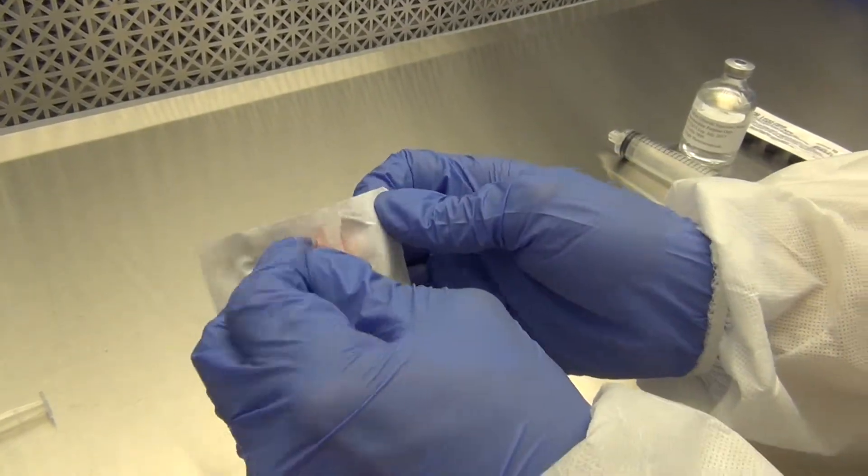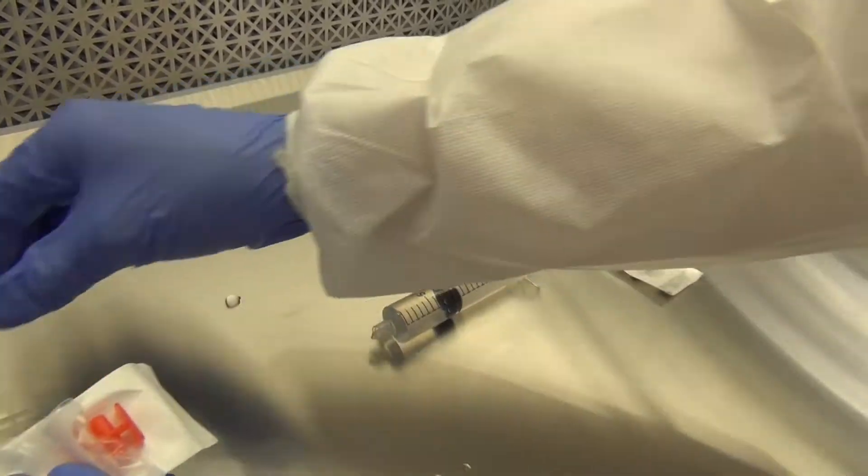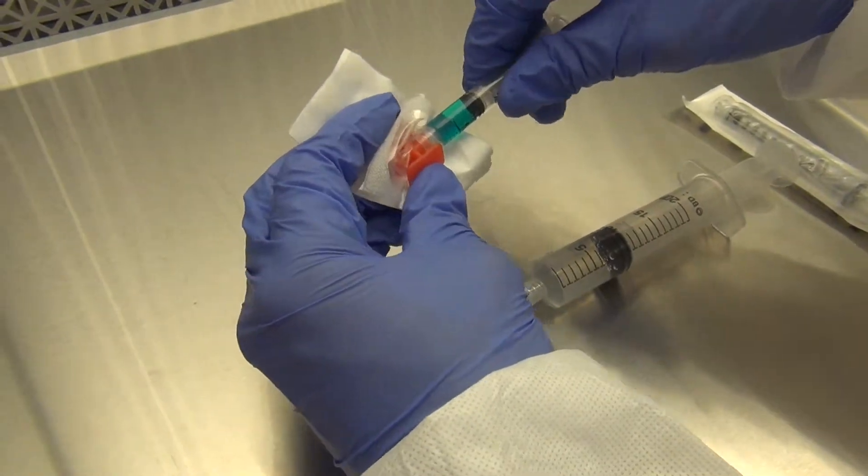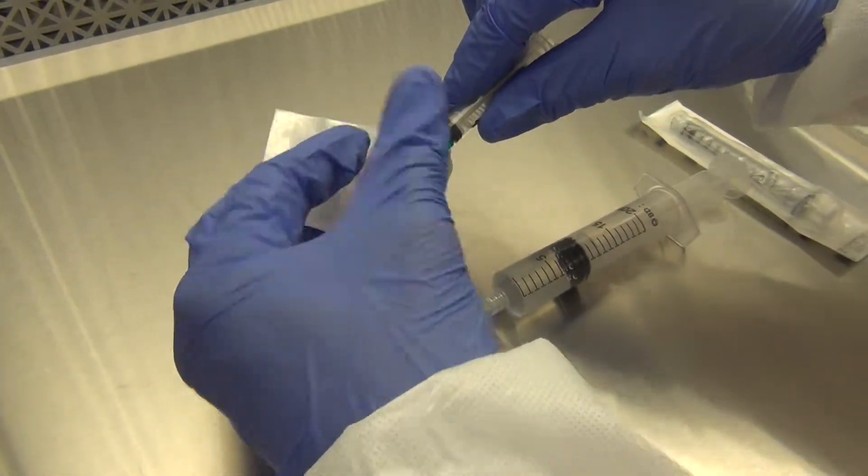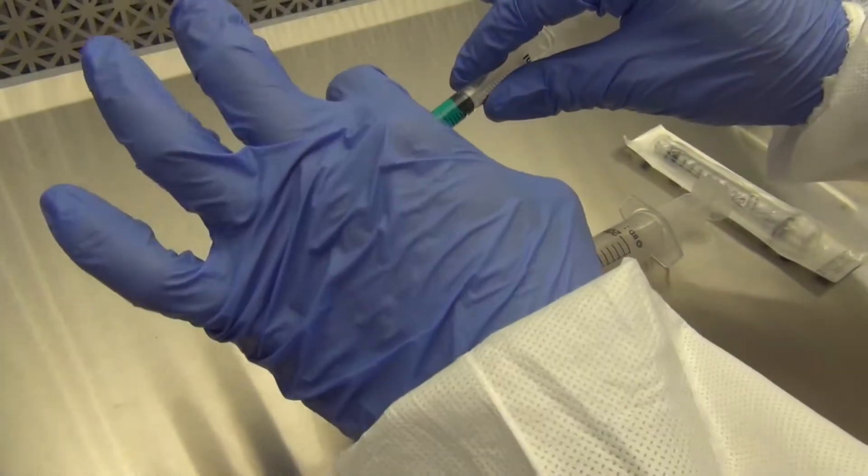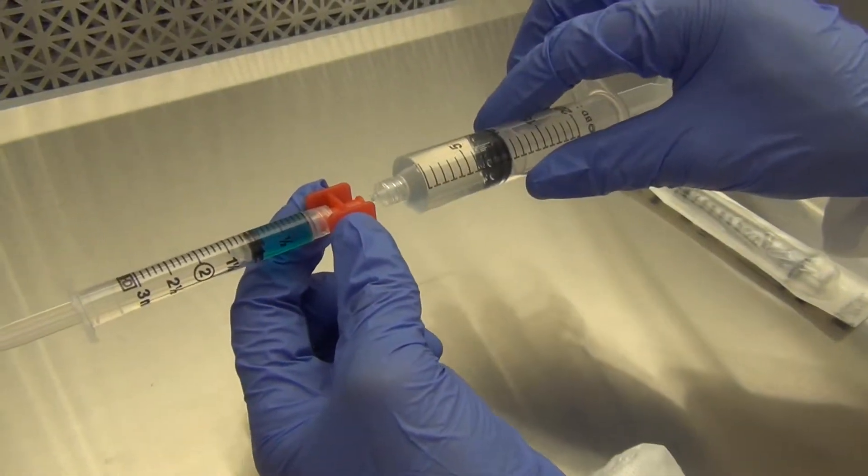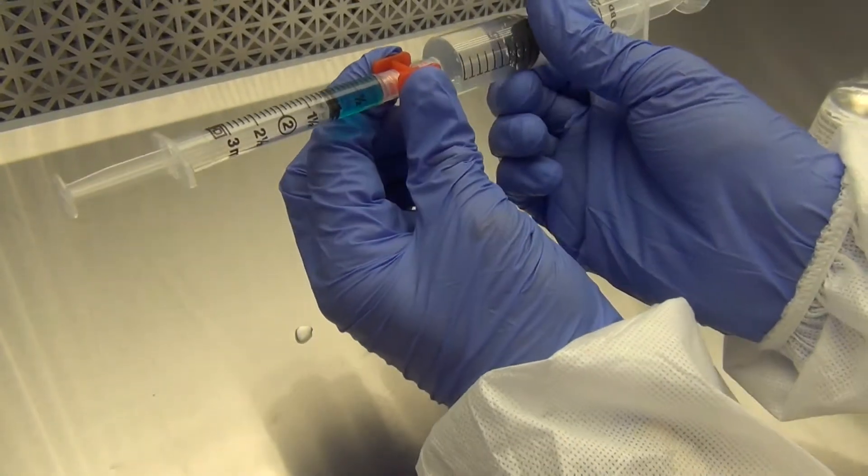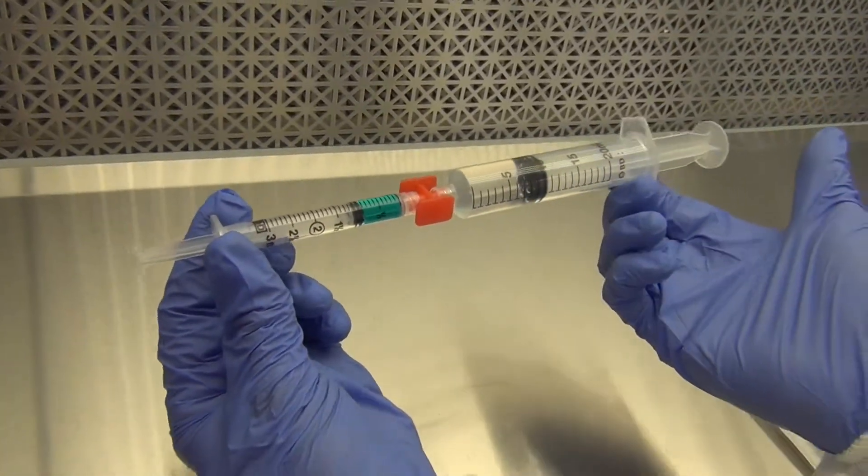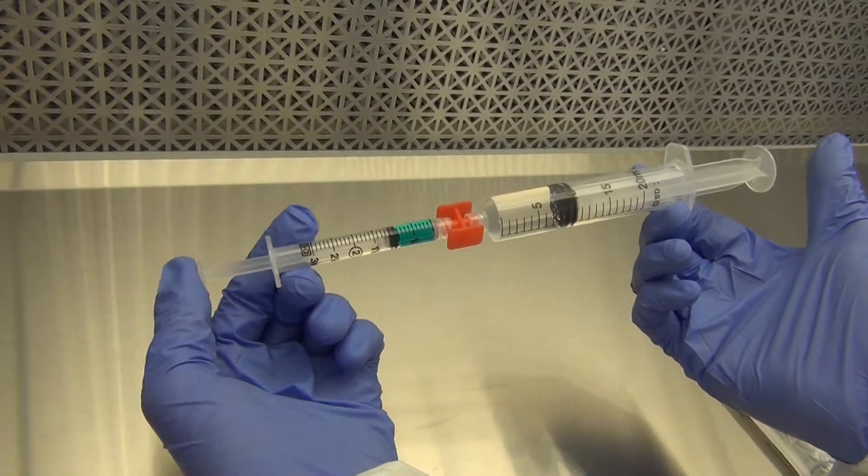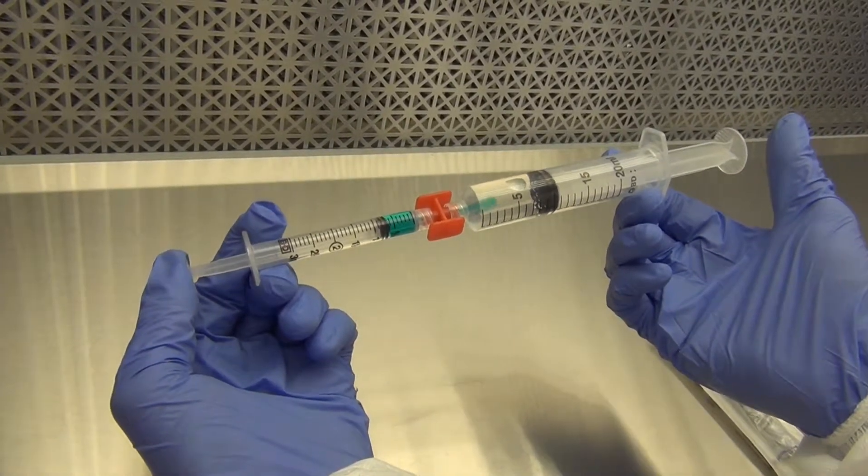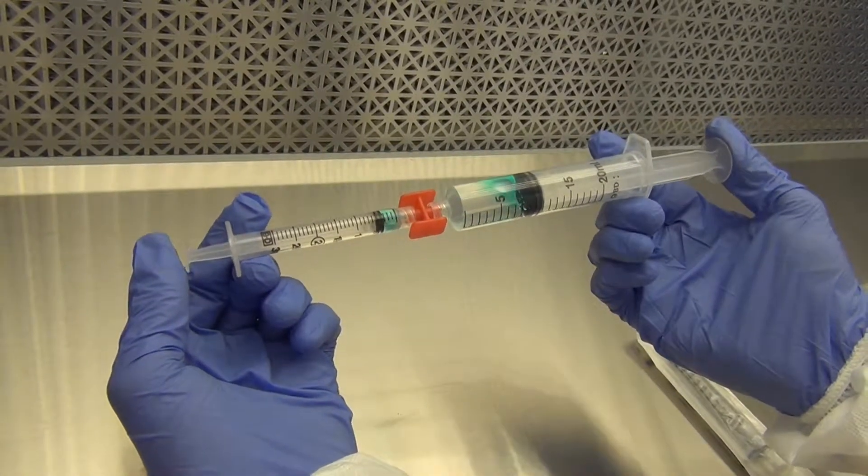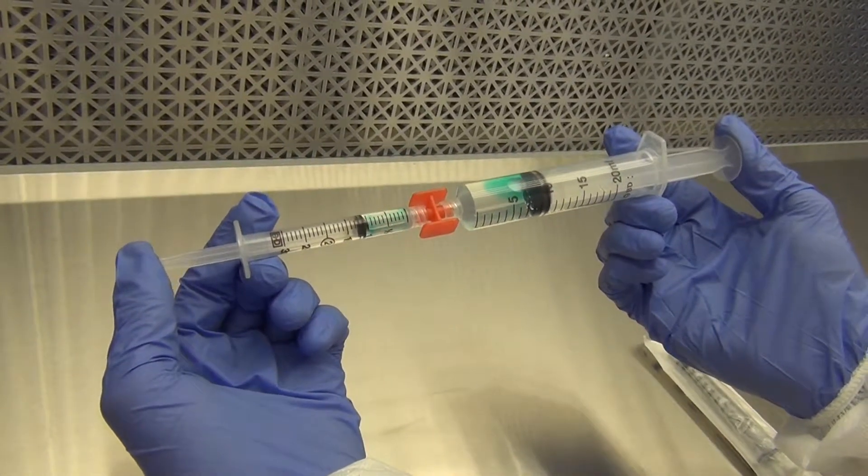Open the red lure lock connector. Affix the 3 milliliter syringe to one end of the lure lock. Affix the 20 milliliter syringe to the other end. You are now going to mix the drug with the sodium chloride. Be very careful when you are doing this because the pressure from the larger syringe can cause the plunger from the smaller syringe to pop right out. So you want to go slowly and be mindful of the amount of pressure that you are using.